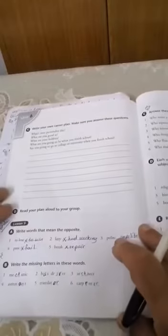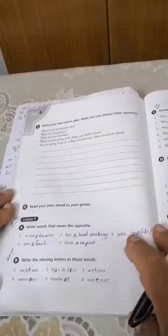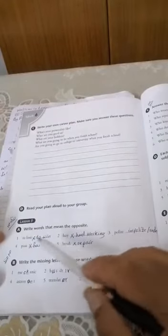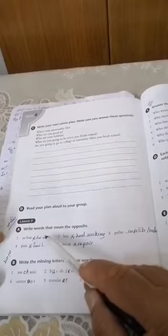Now we should skip over to page 88. These are very important things. Lesson nine, you have to put this notice. Here the opposite: to lose, to win. Two, lazy, hard-working.